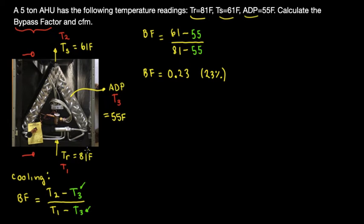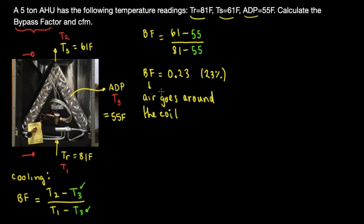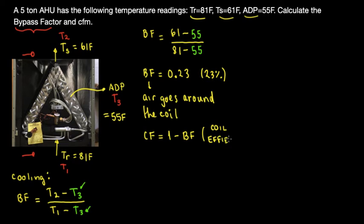So what does 23% mean? It means 23% of the air is passing around the coil — not going through it, but going around it. That is the bypass factor: air goes around the coil. From that bypass factor we can now calculate the contact factor.